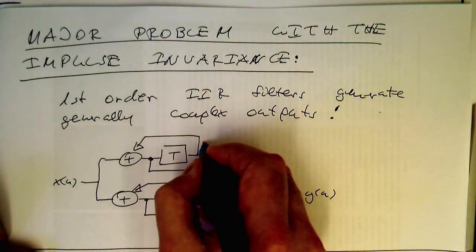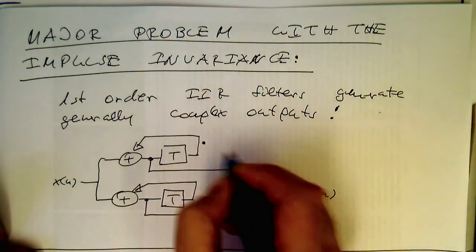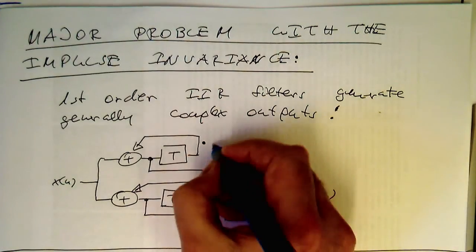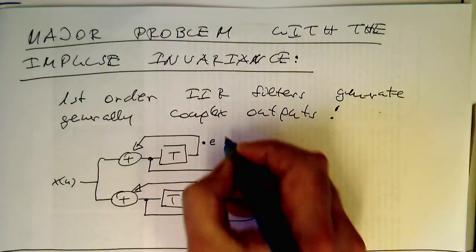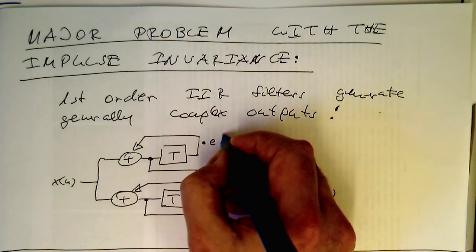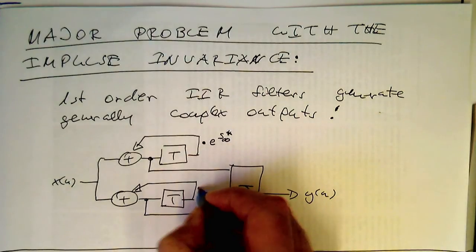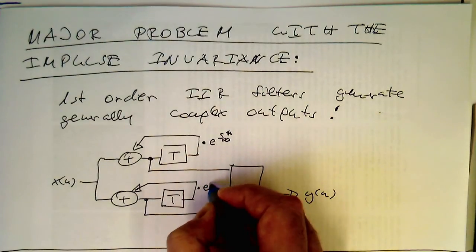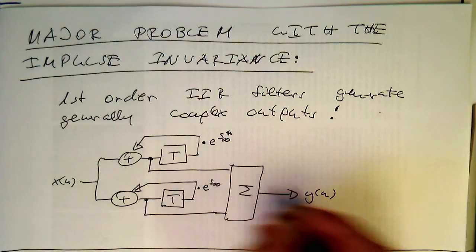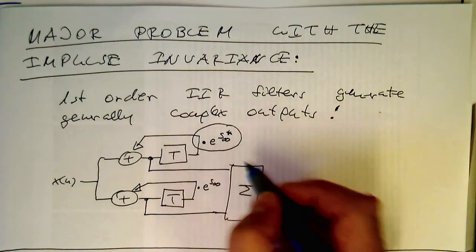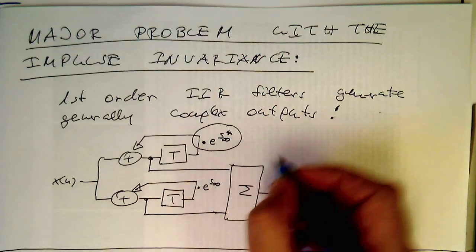So then this factor here we had, if you go back to this factor here, then this one was here e to s infinity star, and then this the other one was e to s infinity. And so this multiplication here makes this recursive operation complex.